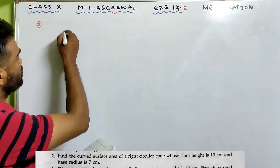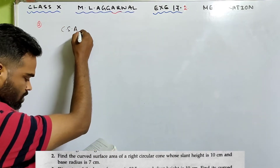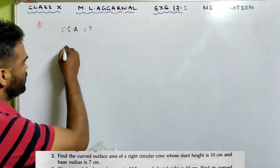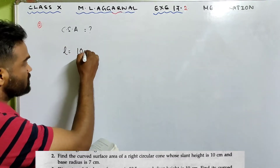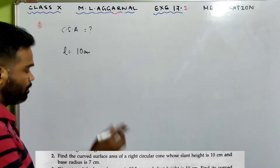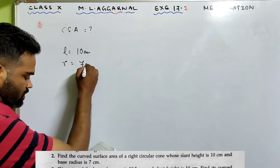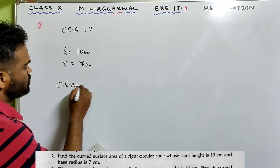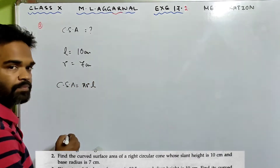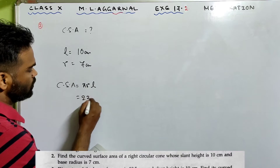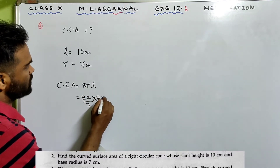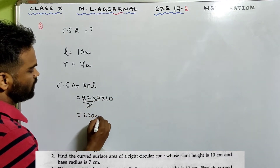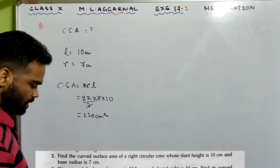Question 2: Find the curved surface area of a right circular cone whose slant height L = 10 cm and base radius = 7 cm. CSA = πRL = (22/7) × 7 × 10 = 220 cm². Done — pretty easy.